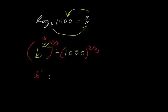So this is just b to the first or just b equals 1,000 to the two-thirds. Now 1,000 to the two-thirds can be separated as 1,000 squared to the 1 third or 1,000 to the 1 third raised to the second power.